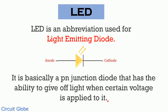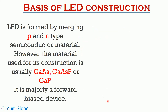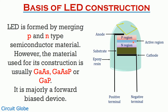Let's move further and understand the construction of light emitting diodes. Light emitting diodes are basically formed when P type semiconductor material is merged with an N type semiconductor material. But LEDs are not formed using silicon or germanium as their basic material. Instead, we use gallium arsenide, gallium arsenide phosphide, or gallium phosphide as the basic material at the time of LED fabrication. The reason to use these materials is that they exhibit a special property through which they emit energy in the form of photons rather than in the form of heat.